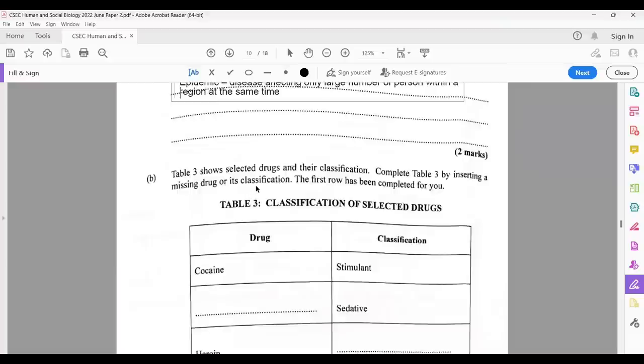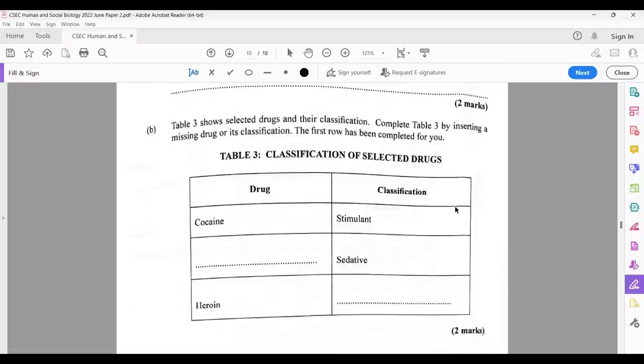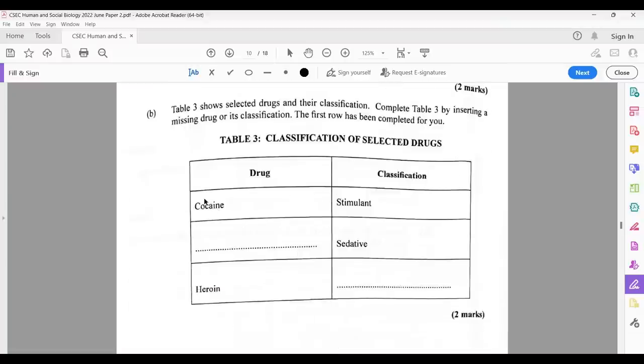Table three shows selected drugs and their classification. Complete table three by inserting a missing drug or its classification. We have cocaine and it's classified as a stimulant. Now they leave a blank and they ask you to provide a sedative. And you could have chosen any sedative you want. Morphine, oxycodone, tramadol, any of them would satisfy. You only need to give one answer. Heroin, they ask you, what is the classification of heroin? And I hope persons know that heroin is a depressor.